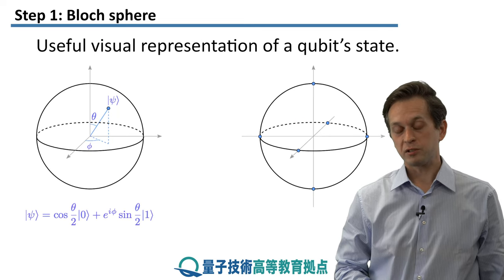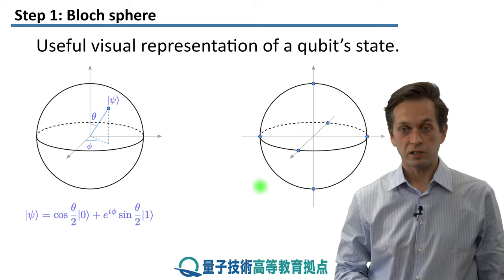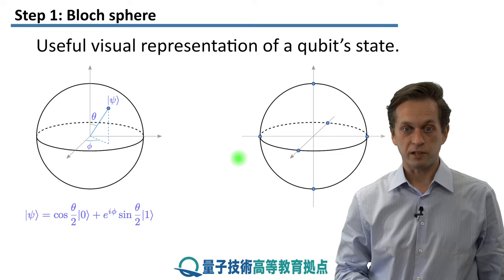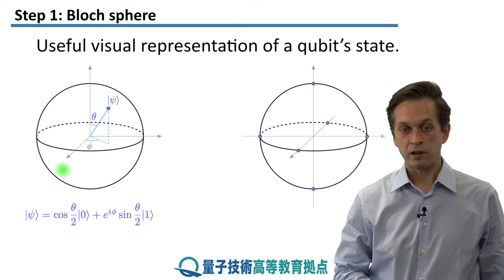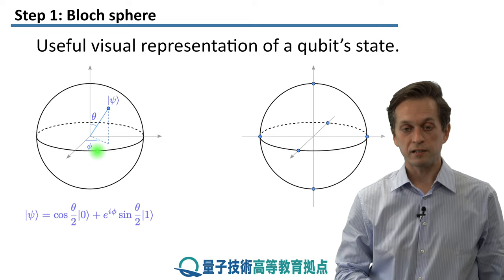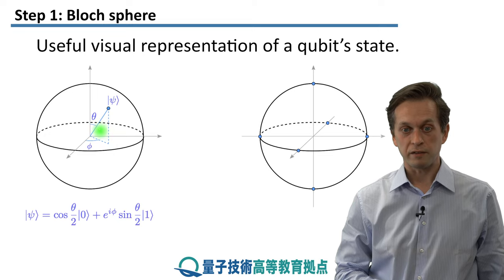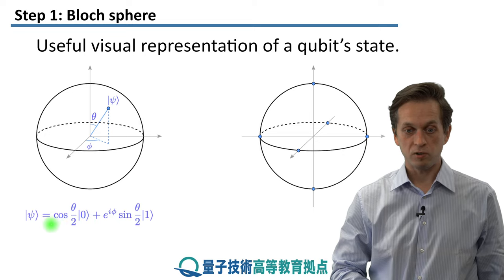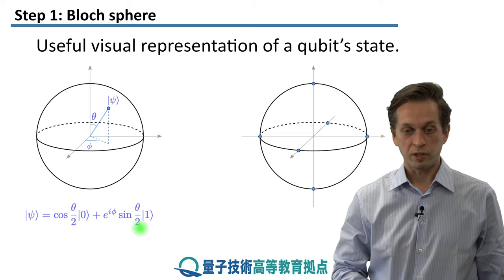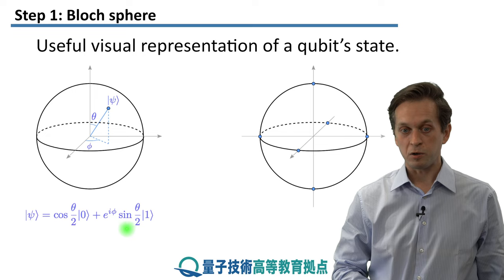Another very useful representation of quantum states is using the Bloch sphere. This is a visual representation that gives us a very intuitive way of thinking about quantum states. So a Bloch sphere is a three-dimensional sphere. We have here the x-axis, here the y-axis, and the vertical is the z-axis. And all the states are given as points on the surface of this sphere, parametrized by this angle theta and this angle phi. So then the state psi can be written in the following form, where the probability amplitude for basis state zero is given by cos theta over two, and the probability amplitude for basis state one is given by this complex phase, e to the i phi, times sine of theta over two.